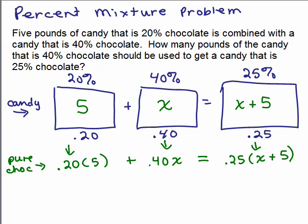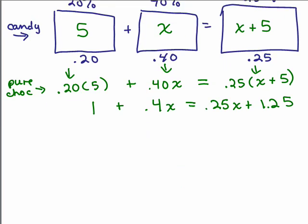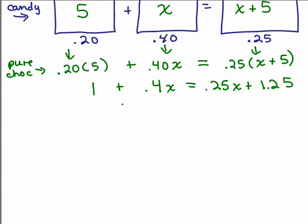You can do this problem with decimals as is. Let's do it that way first. So I have 0.2 times 5, or 1/5 of 5, that's going to be 1. I'm going to write this as 0.4x, and I'm going to write this as 0.25x plus 0.25 times 5, which is 1.25. So this is if I just want to deal with the decimals as is.